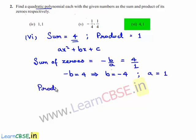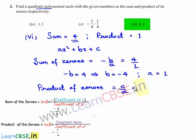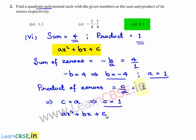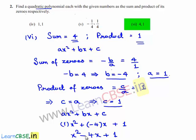The product of the zeros is equal to c/a, and the given product is 1. By cross multiplication, c = a = 1. Finally, a = 1, b = -4, and c = 1. Substituting in ax² + bx + c, we get x² - 4x + 1. Hence, the required quadratic polynomial is x² - 4x + 1.